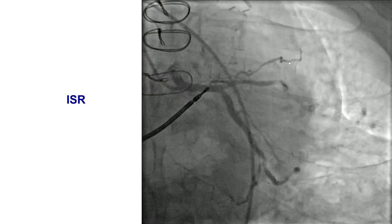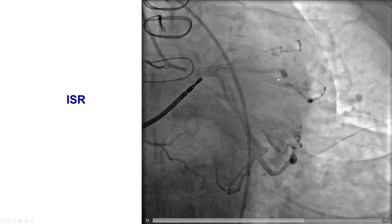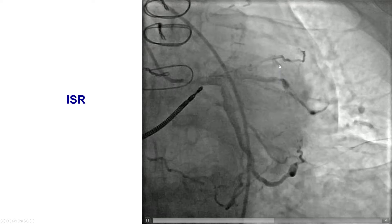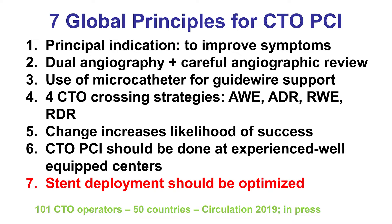Unfortunately, the patient came back a few months later with recurrent unstable angina and had developed in-stent restenosis in the distal portion of the stent, which means we probably didn't do a great job expanding the stent initially. This is reflected in global principles for CTO-PCI: stent deployment should be optimized because CTOs are often calcified and diffusely diseased, and long stent lengths need to be placed.